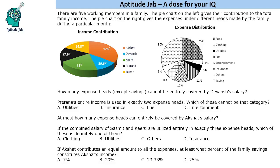Hello everyone, welcome to Aptitude Jab. This is a set involving a couple of pie charts. There are 5 working members in a family. The pie chart on the left gives their contribution to the total family income, and the pie chart on the right gives the expenses under different heads made by the family during a particular month. Income is on one side, expenses — including savings — on the other. The same total is distributed in two formats: one in degrees and one in percentages.